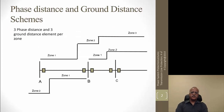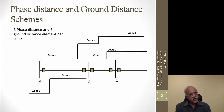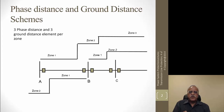We covered in the last lecture how we set the distance elements. There are three elements inside the relay to detect three types of ground faults, and three elements which detect three types of phase-to-phase faults, and these also detect phase-to-phase-to-ground and three-phase faults. The difference between these elements is what voltage and current inputs are used. The A-phase-to-ground element uses the faulted A-phase voltage and the faulted current Ia plus a percentage K0 times the neutral current — the ground current.